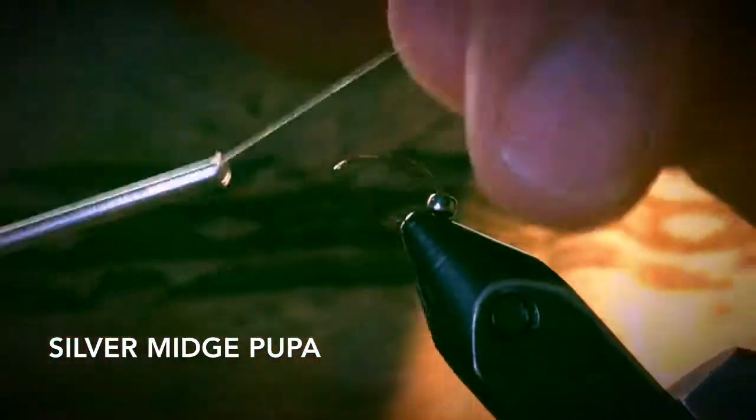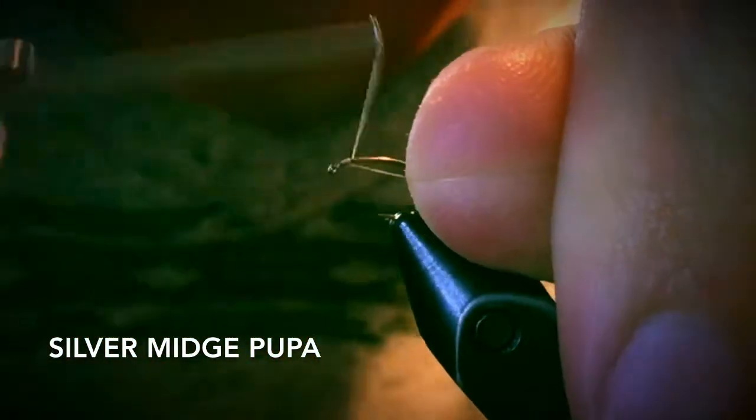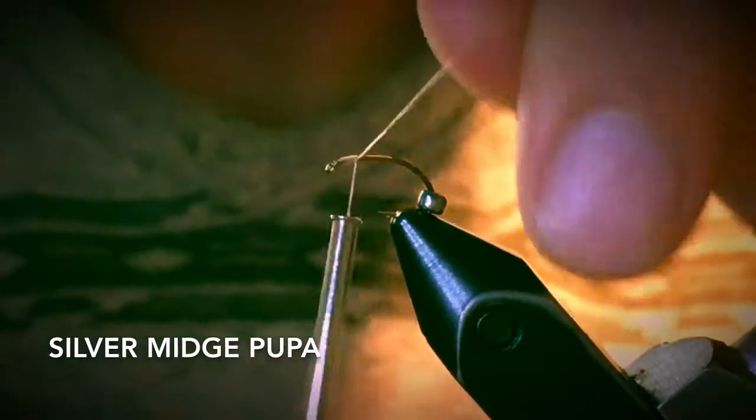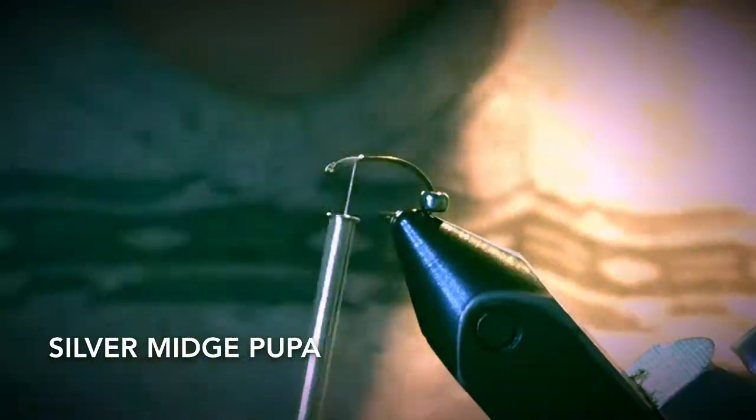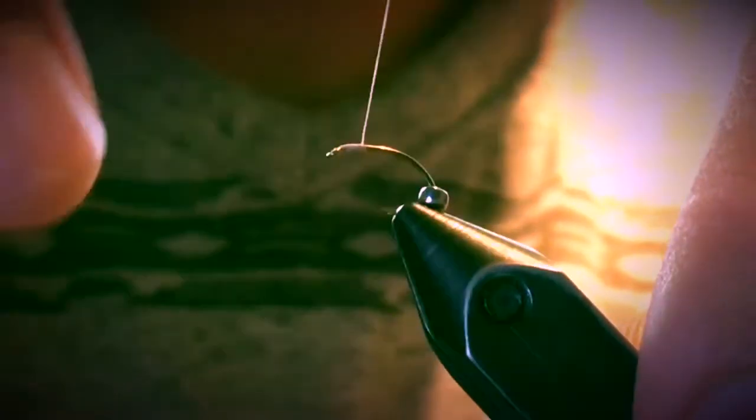Today I'm going to show you how to tie the silver midge pupa. I'm starting with a size 16 curved nymph hook and some 8-0 gray thread, and I've got a little metallic bead.